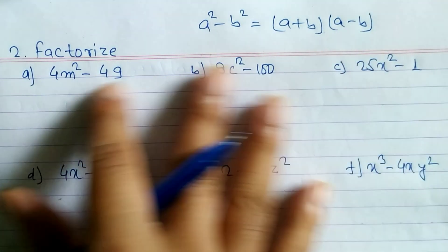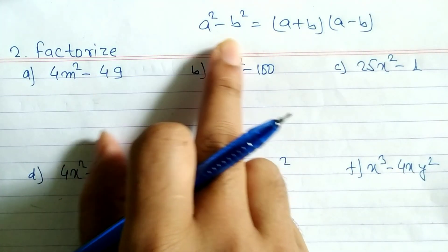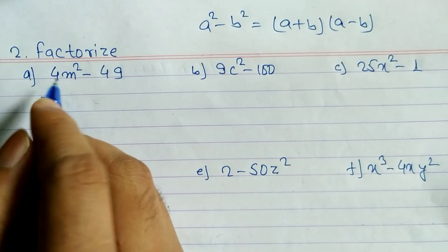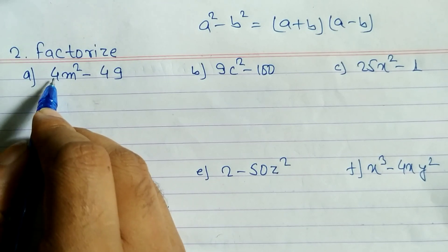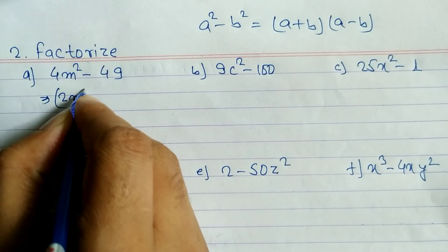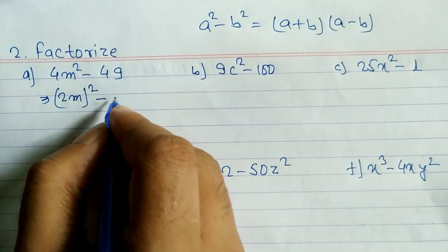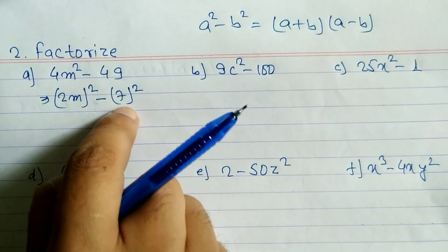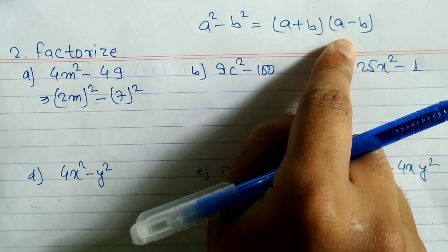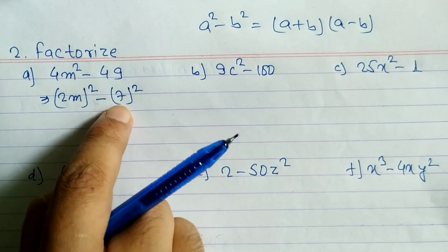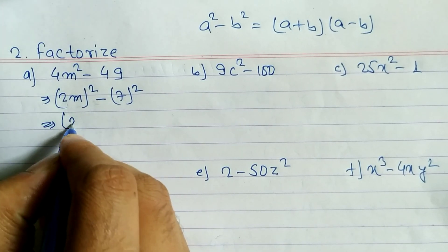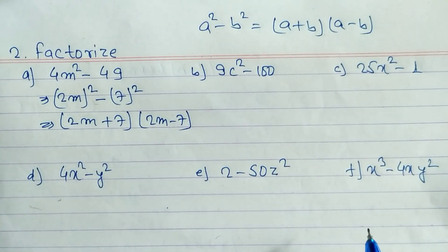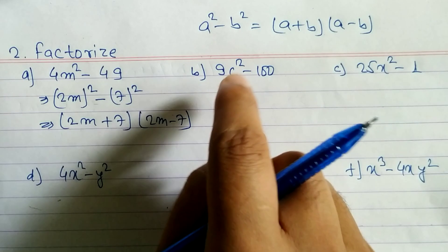First of all, we have to convert this expression in the form of a² - b², and we use the formula (a+b)(a-b). For problem a, the square root of 4 is 2, so we write (2m)² minus (7)² since the square root of 49 is 7. This is now in the form a² - b², so we apply the formula to get (2m + 7)(2m - 7).